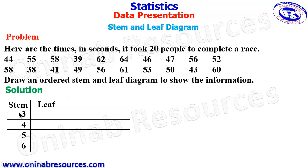Having gotten this, we then look at the 30s — the numbers that are in the 30s. We have 39 and 38. Between 39 and 38, 38 is less than 39. So we are going to record 38 first. Since we have recorded the tens digit, the unit digit 8 goes under the leaf column. Then for 39, the unit digit is 9, so we have it under the leaf column. By reading, we have 38, 39.